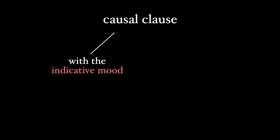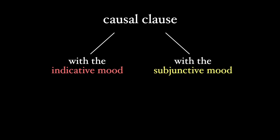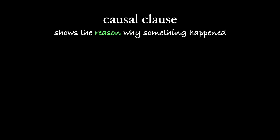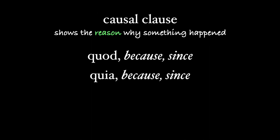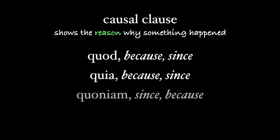The topic of this video is the causal clause, and when it takes a verb in the indicative mood, and when it takes a verb in the subjunctive mood. A causal clause shows the reason why something happened — its cause — and these are introduced by the particles quod and quia, both of which mean 'because' or 'since.' Quoniam carries with it the sense of 'already' or 'now' from the iam, and so it's often translated 'since now,' but 'since' or 'because' are perfectly acceptable.